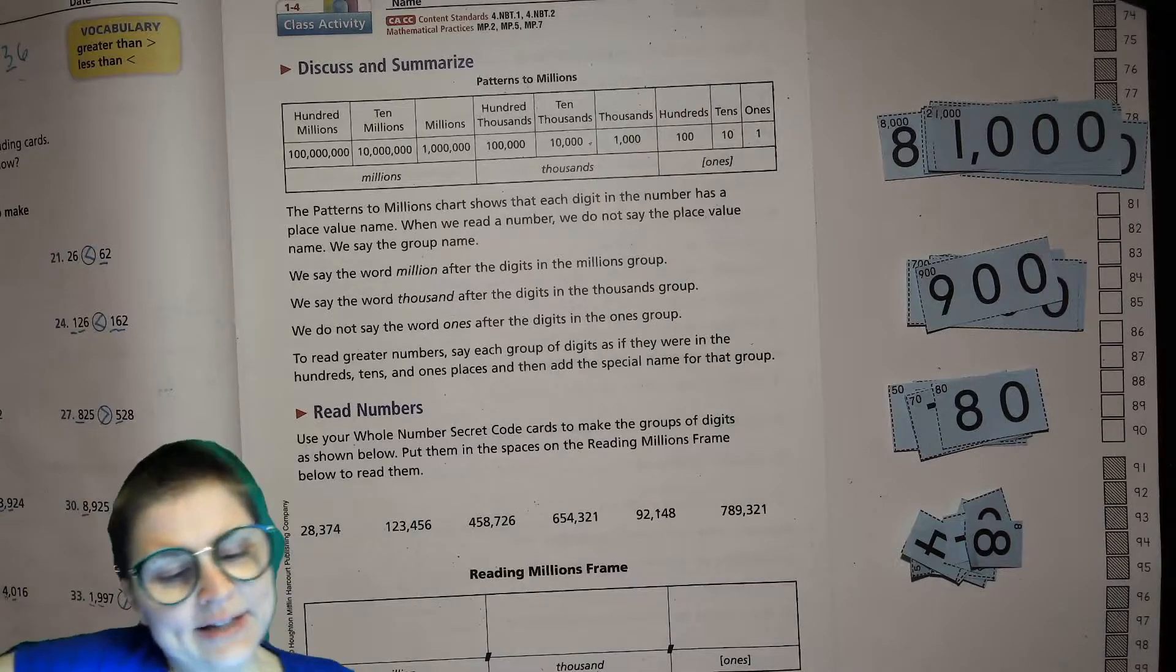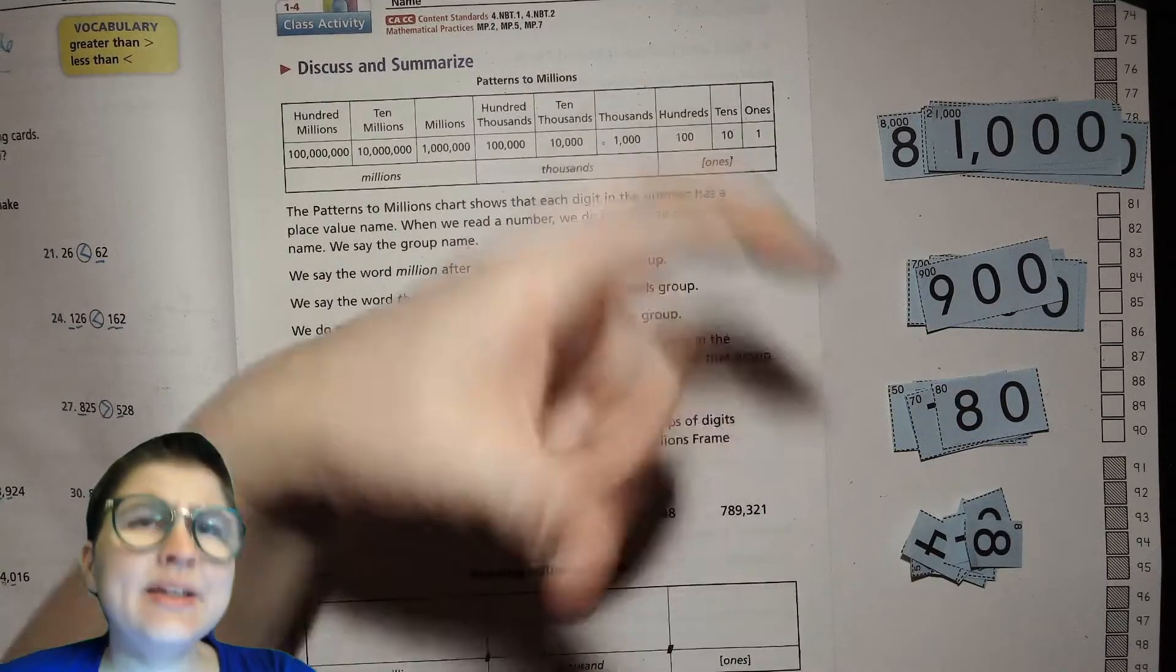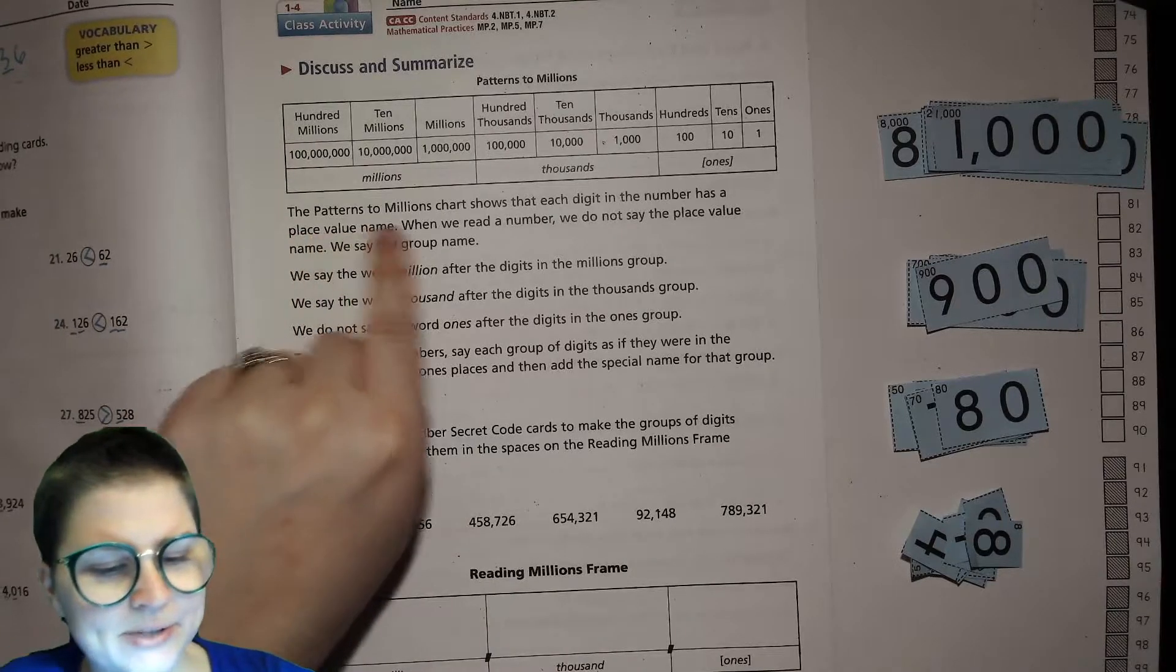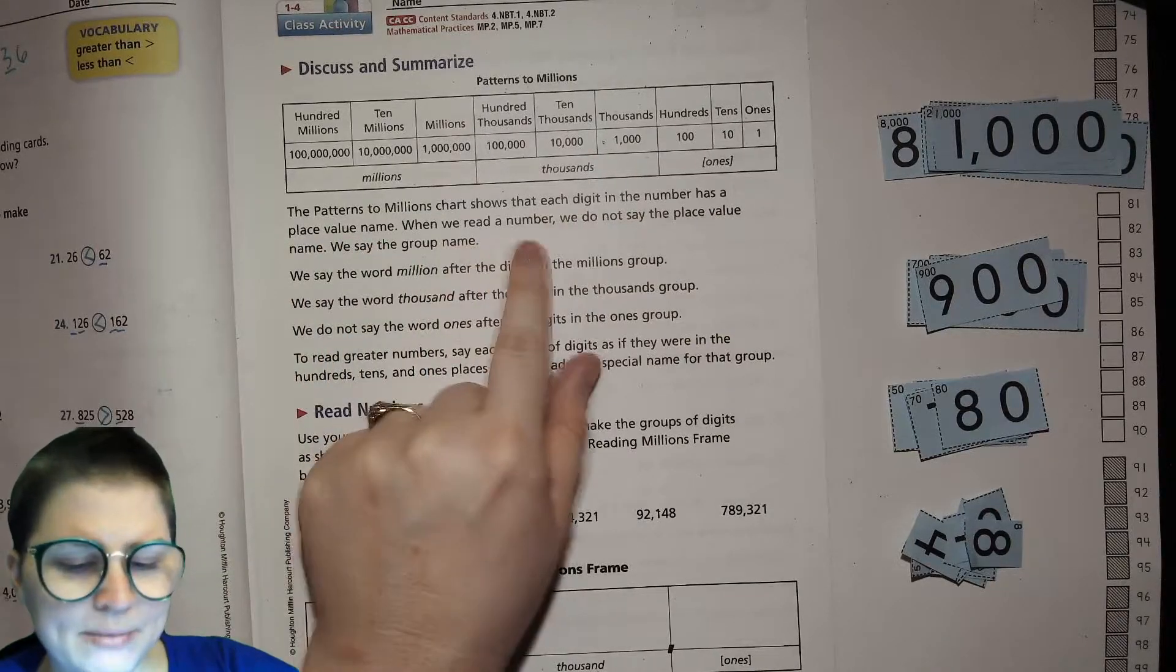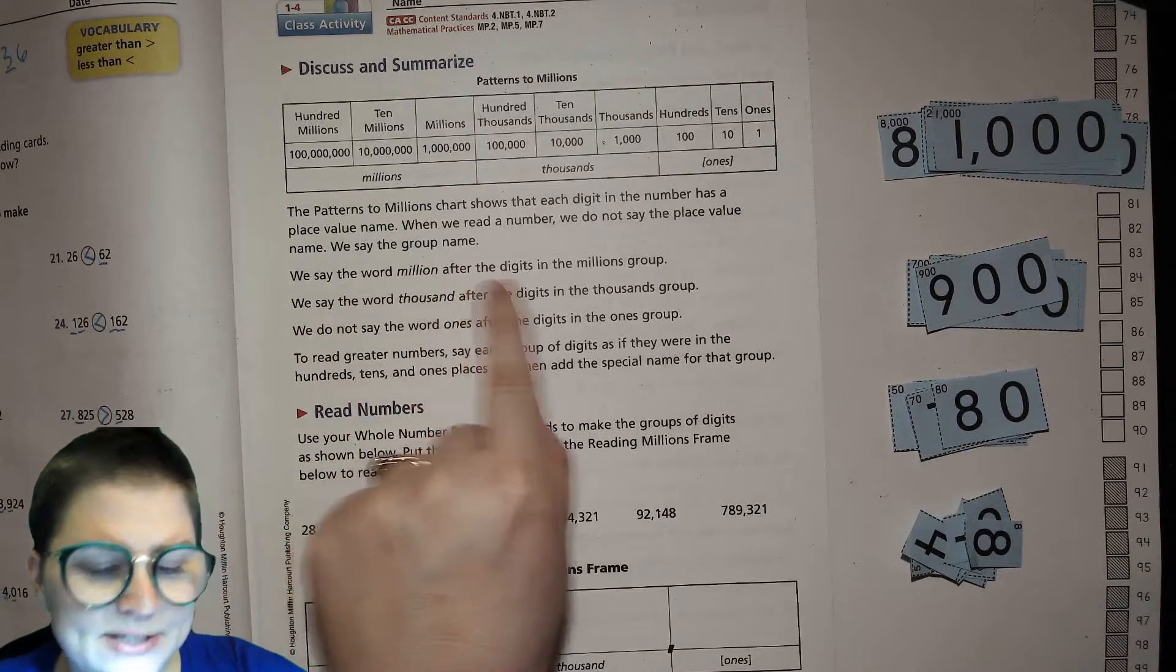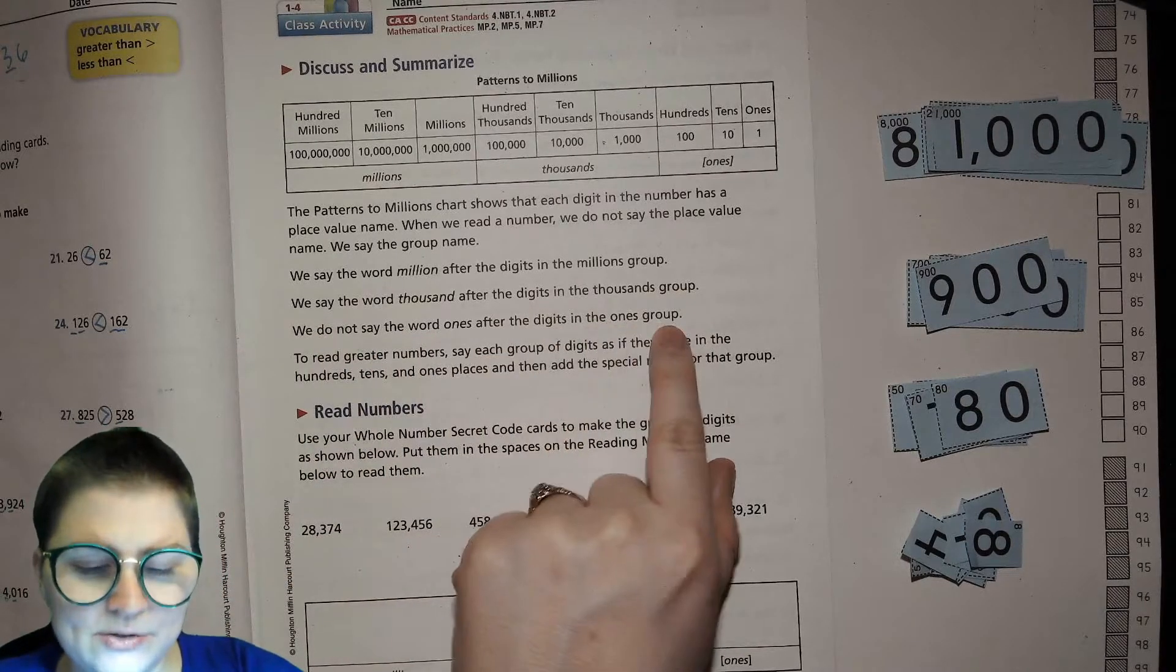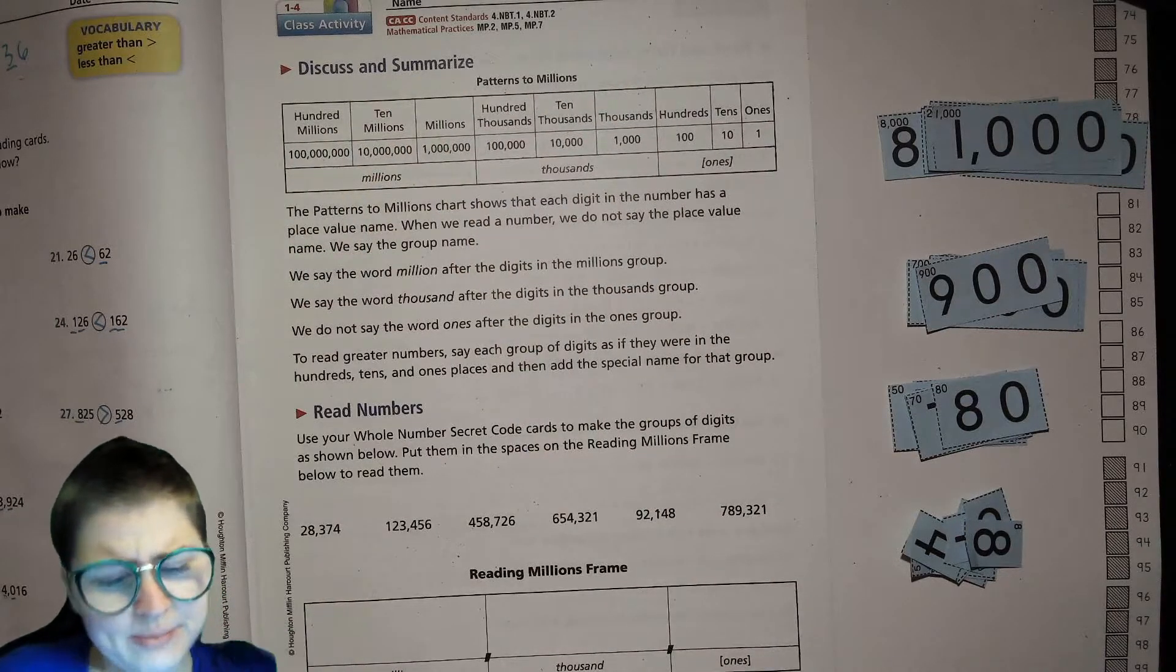This is a little table that's helping us understand how we read these larger numbers. There is a pattern to it and that's what we're talking about right now. The pattern to millions chart shows that each digit in the number has a place value name. When we read a number, we do not say the place value name. We say the group name. We say the word million after the digits in the millions group. We say the word thousand after the digits in the thousands group. We do not say the word ones after the digit in the ones group.